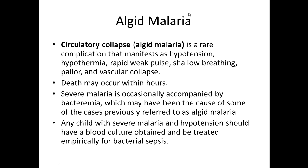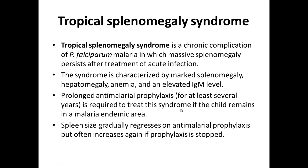Algid malaria, or circulatory collapse, is a rare complication that manifests as hypotension, hypothermia, rapid weak pulse, shallow breathing, pallor, and vascular collapse. Death may occur within hours. Severe malaria is occasionally complicated by bacteremia, which may have been the cause of some cases previously referred to as algid malaria.